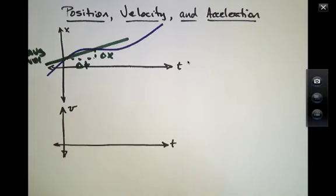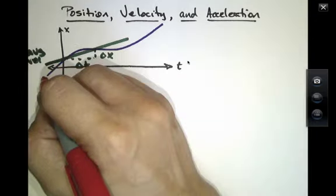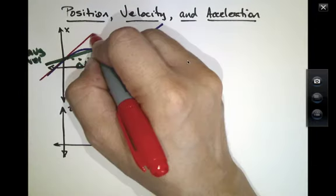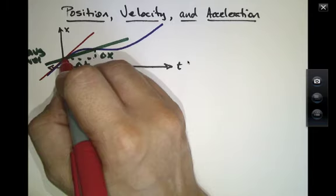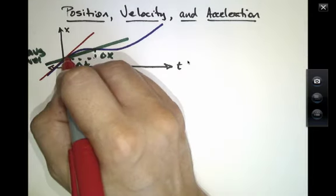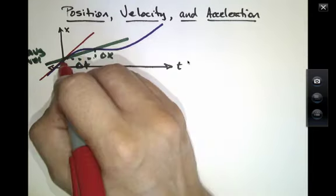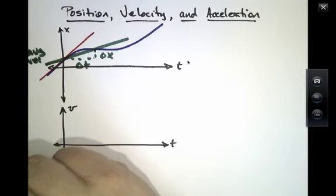And we've also talked a little bit about an instantaneous velocity, that is, the speed or the velocity at a given instant in time. And that's represented by a tangent line to the graph at a particular time. So the velocity at this time right here, I can find by drawing a little tangent line at that time.